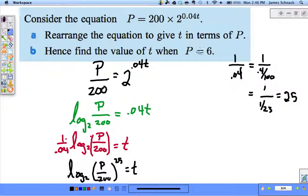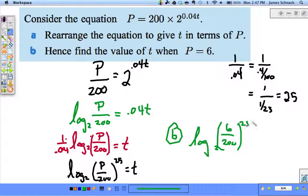Find the value of t when P = 6. That's easy now—we just drop 6 in. So for part b, t = log base 2 of (6/200)^25, or leave the 25 as a coefficient, or leave it as 1/0.04. It doesn't matter—we should get the same answer. Now we plug this into our calculator.